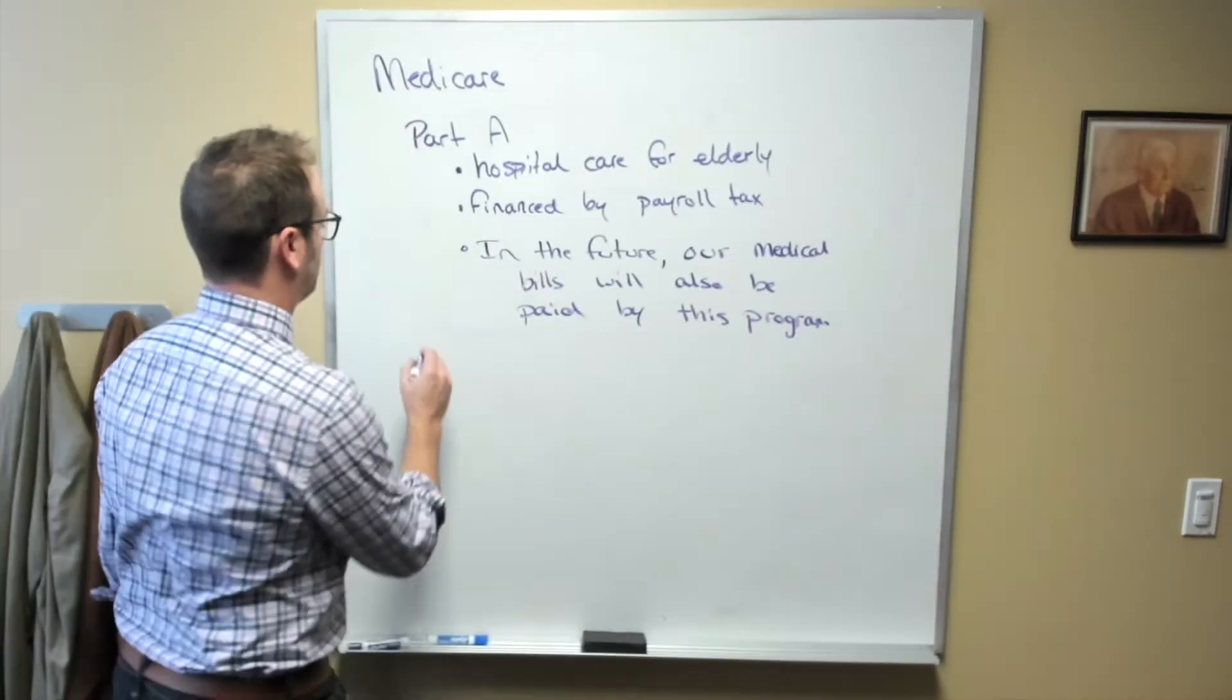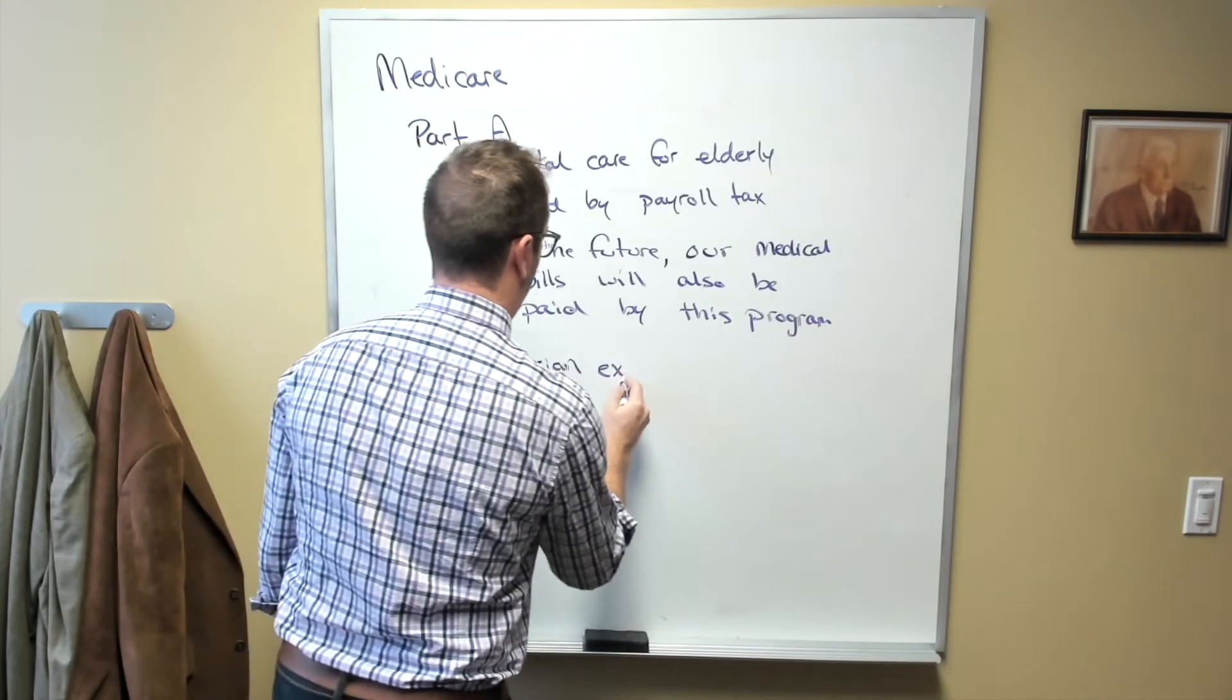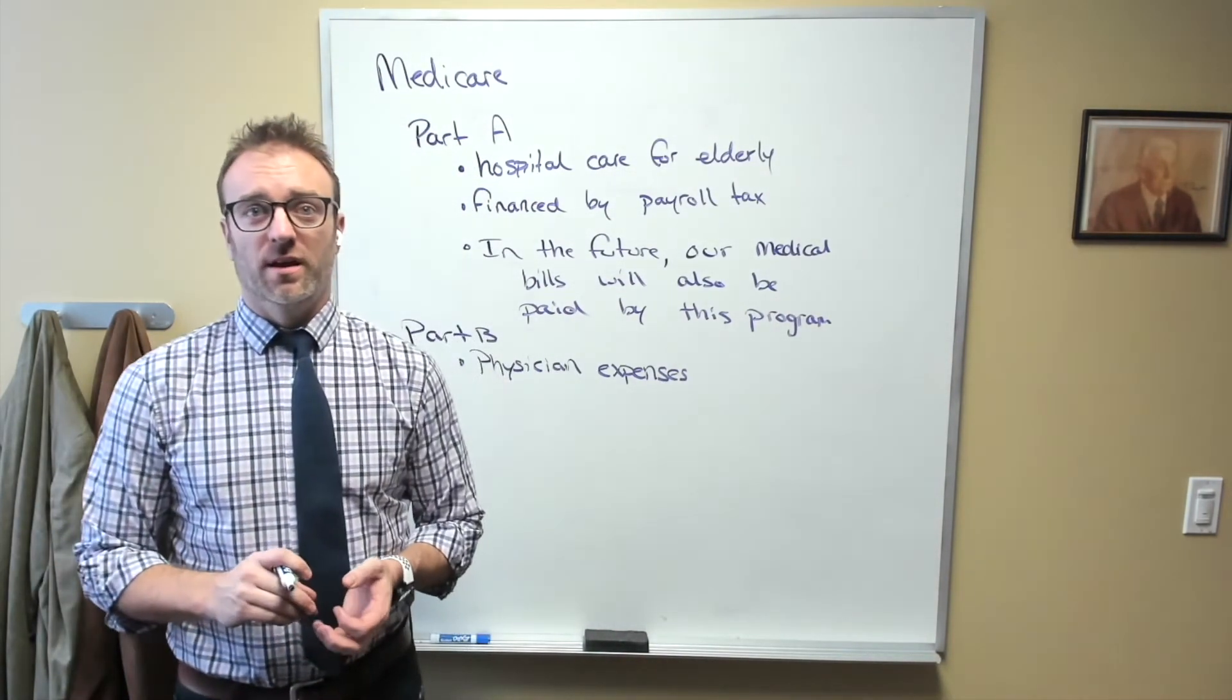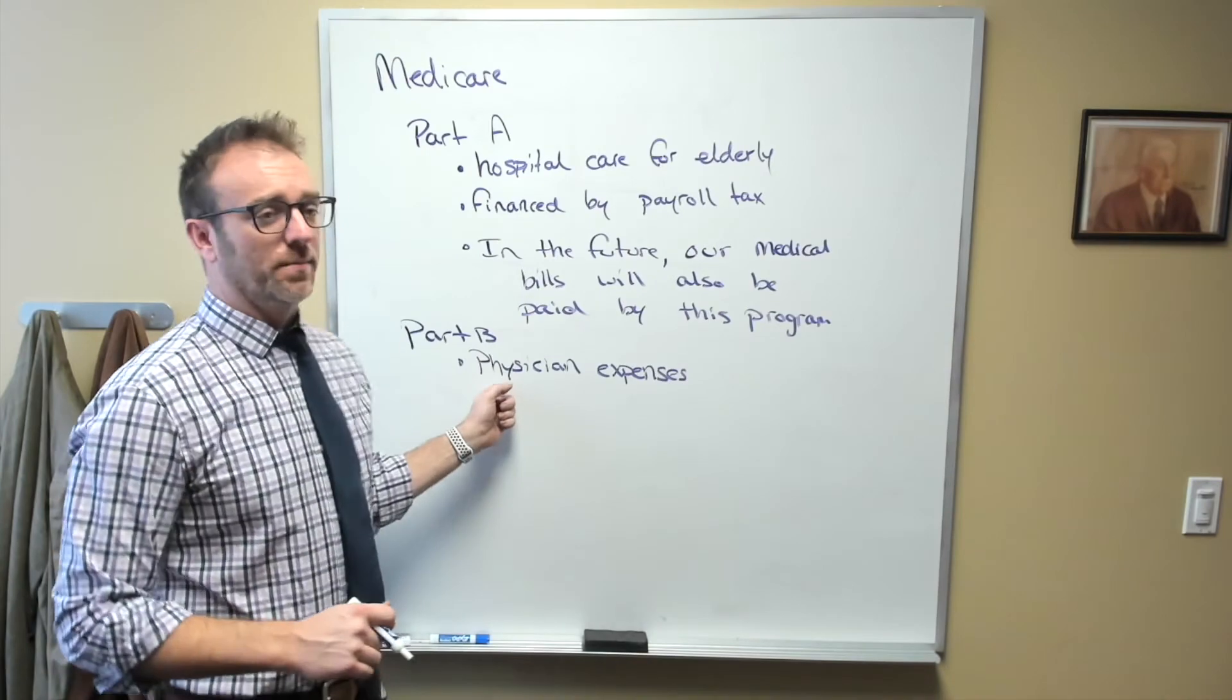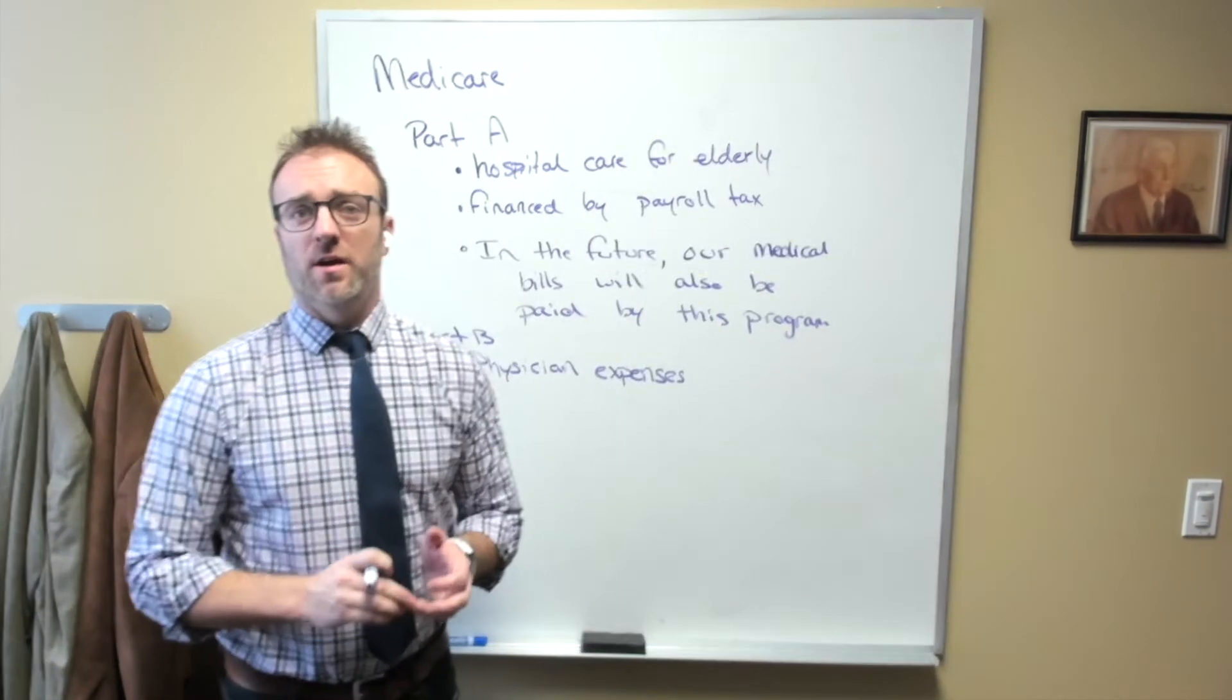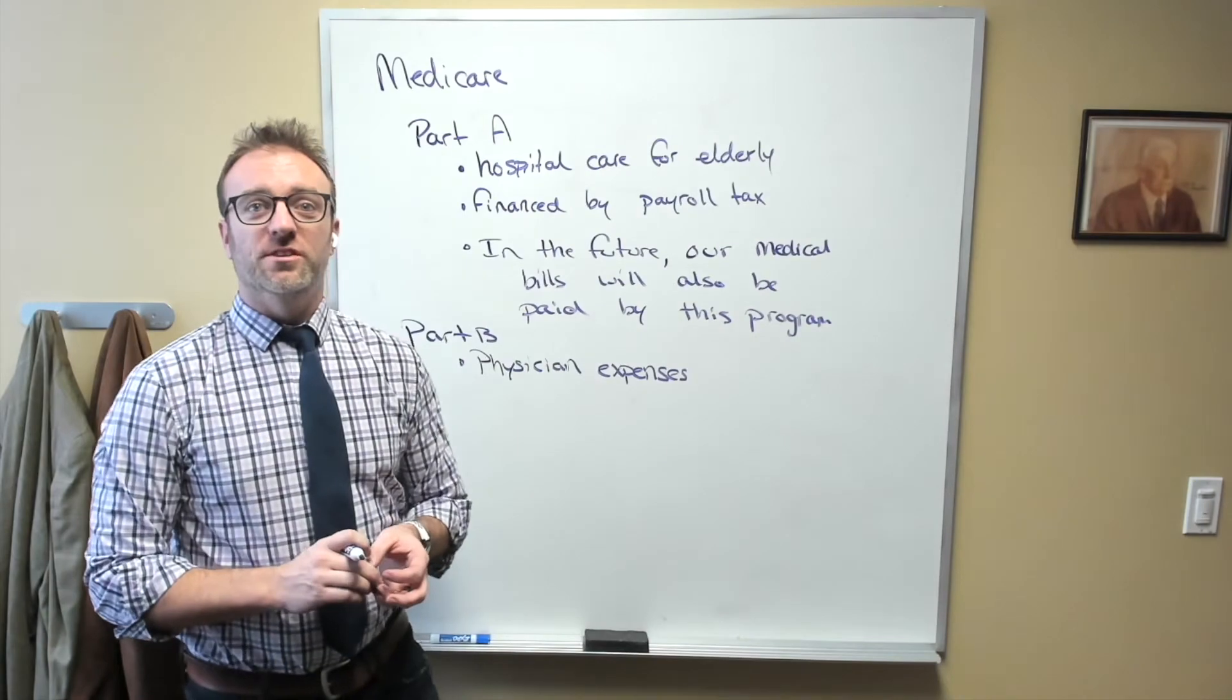Part B covers the physician expenses or physician fees. So when you go to the doctor, what you have to do is you pay not only to be at the hospital, which would be your hospital expenses and covered by Part A, but you're also going to have to pay for the physician's time. And Medicare Part B covers that. Part C covers managed care facilities. Part D covers prescription drugs.